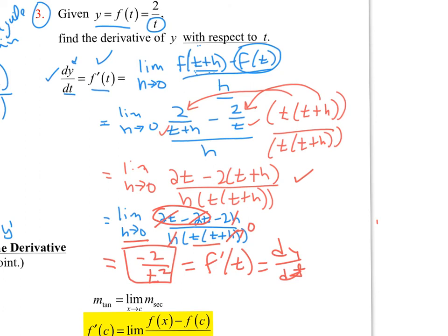Remember to keep the limit going throughout until you actually perform the direct substitution of 0. Once you do direct substitution, you can drop the limit notation.